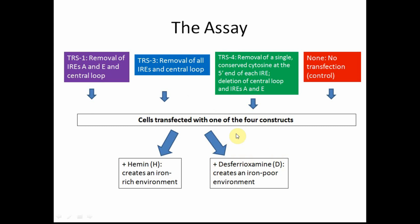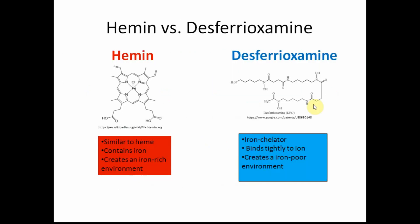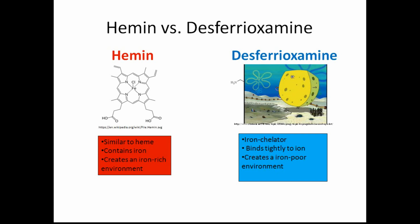They transfected these constructs into mouse fibroblast cells and treated the cells with either hemin or desferioxamine. A fourth group with no transfection served as a control to detect possible nonspecific binding of the antibody, and was also a control to measure basal levels of TFR synthesis in these cells. Hemin, which is similar to heme, contains iron and creates an iron-rich environment when added to the cell. Desferioxamine, on the other hand, is an iron chelator that binds tightly to iron, creating an iron-poor environment — think of it as a sponge that soaks up iron and makes it unavailable for the cell to use.